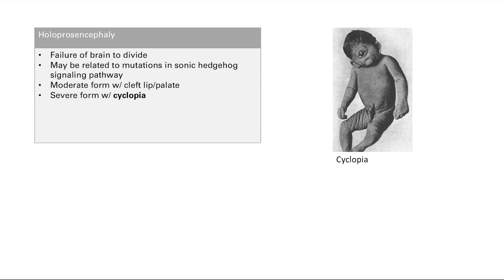Finally, we have holoprosencephaly — failure of the brain to divide into left and right hemispheres. Originally it starts as one and should split into two; if that doesn't happen, this is holoprosencephaly. It may be related to mutations in the sonic hedgehog signaling pathway. A moderate form presents as cleft lip or palate, and a severe form presents with cyclopia — only one eye — as everything remains midline and undivided.